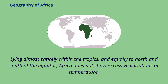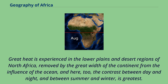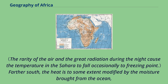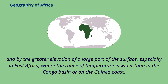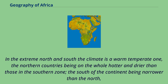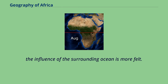Lying almost entirely within the tropics, and equally to north and south of the equator, Africa does not show excessive variations of temperature. Great heat is experienced in the lower plains and desert regions of North Africa, removed by the great width of the continent from the influence of the ocean, and here too the contrast between day and night and between summer and winter is greatest. Farther south, the heat is to some extent modified by the moisture brought from the ocean and by the greater elevation of a large part of the surface, especially in East Africa. In the extreme north and south the climate is a warm temperate one, the northern countries being on the whole hotter and drier than those in the southern zone.